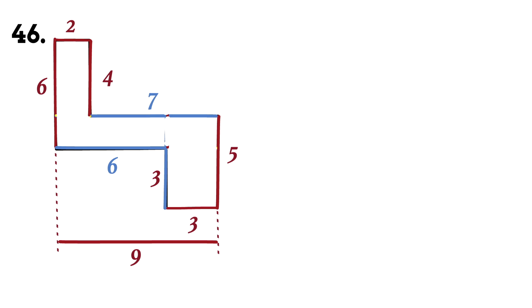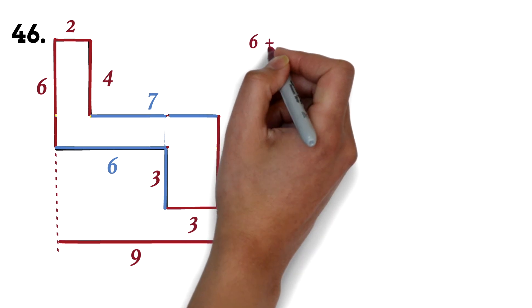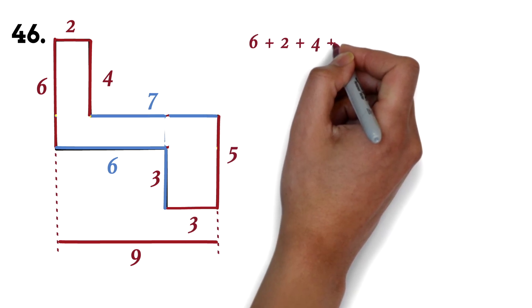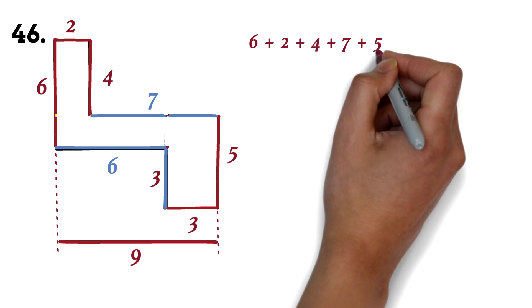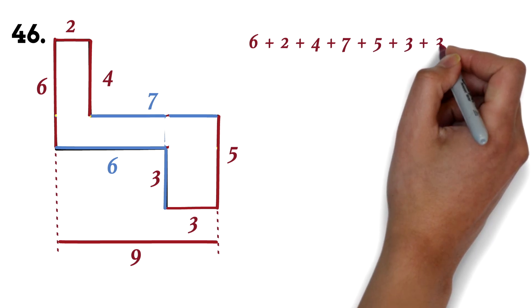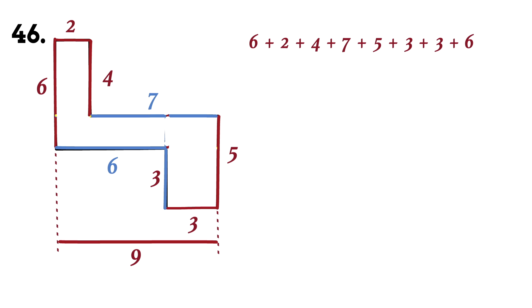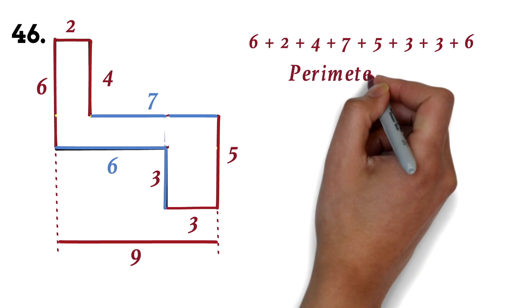Now, we can add all the sides to get the perimeter. 6 plus 2 plus 4 plus 7 plus 5 plus 3 plus 3 plus 6. This will give us a perimeter of 36.